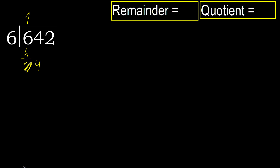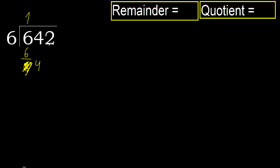Next, bring down the 0 here. 4 is less than 6, therefore go to the next digit — that gives 2 numbers. Therefore, complete with 0. Always complete with 0, because here we have 2 numbers.